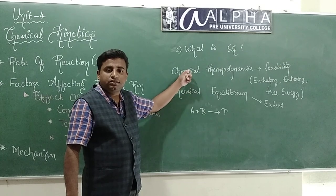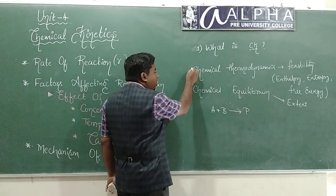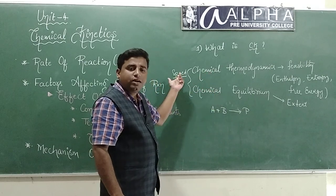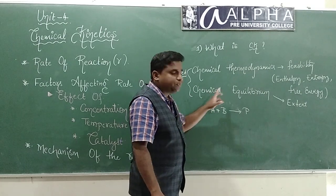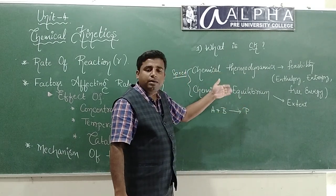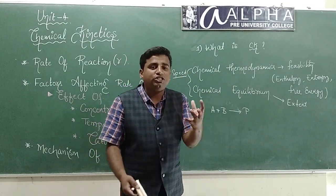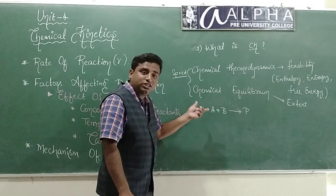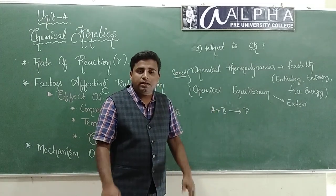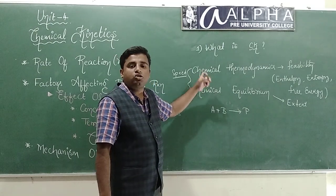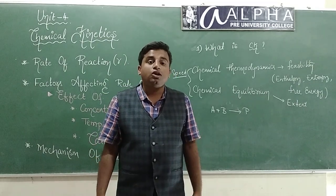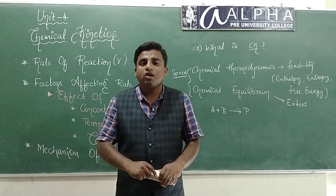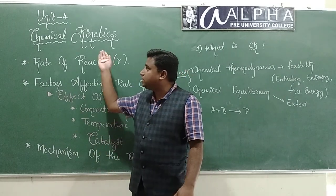None of these two chapters are talking about the speed of the reaction. Thermodynamics talks about feasibility; chemical equilibrium talks about the extent of the reaction. Neither talks about the speed — that is, how much time is required for the reactants to react and for the formation of products, how much time is required for this reaction to get completed. In order to talk about the speed of the reaction, we have introduced a new chapter called chemical kinetics.